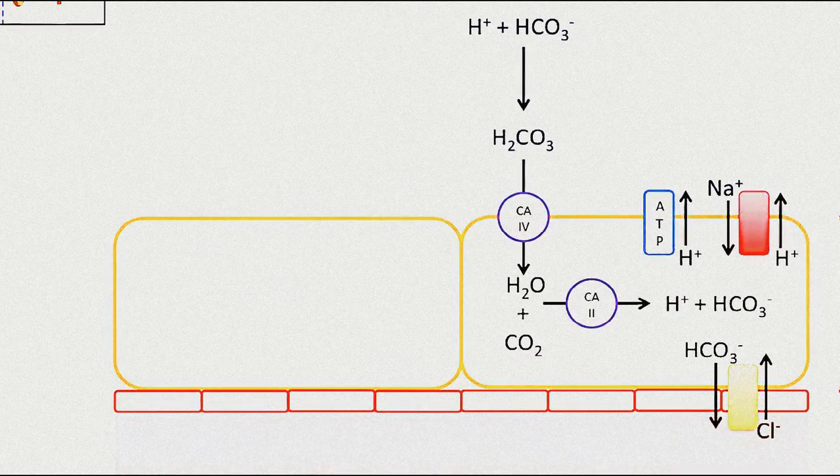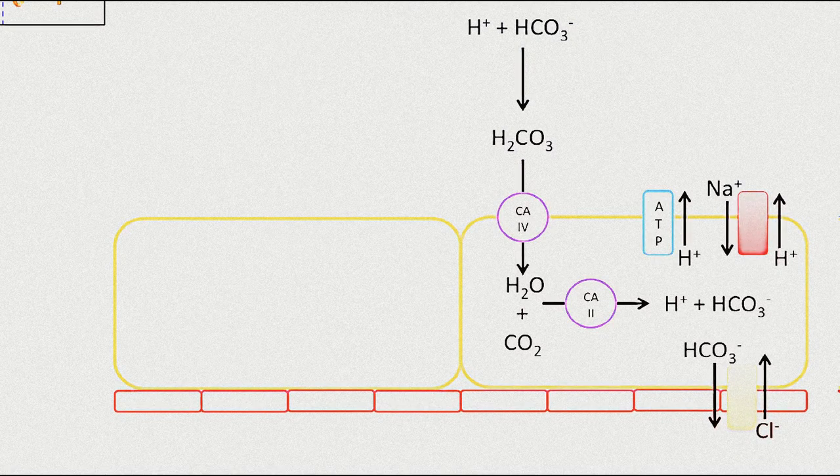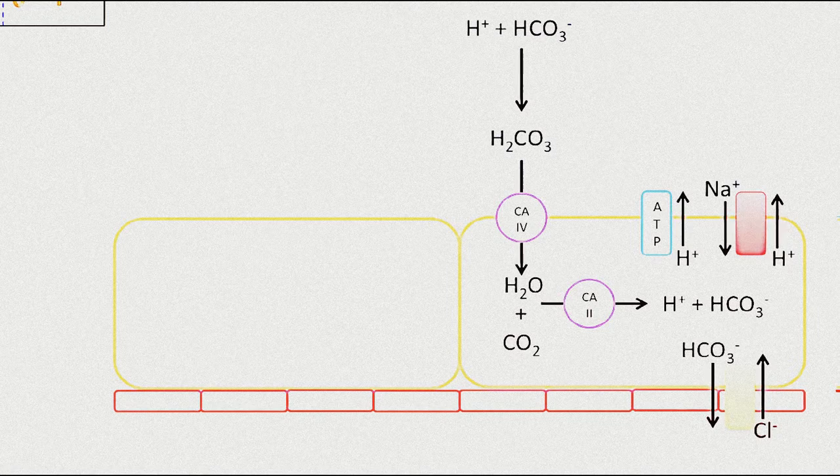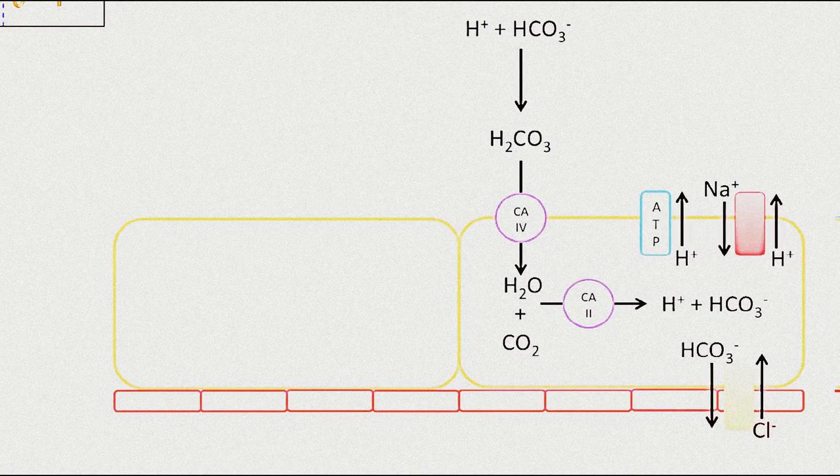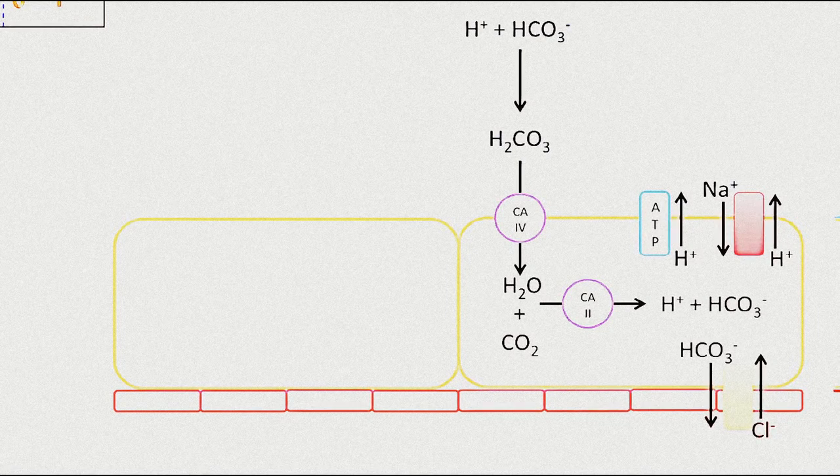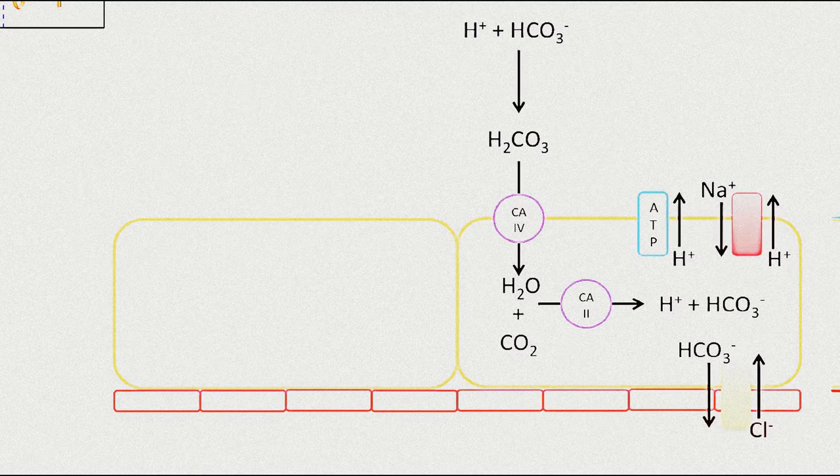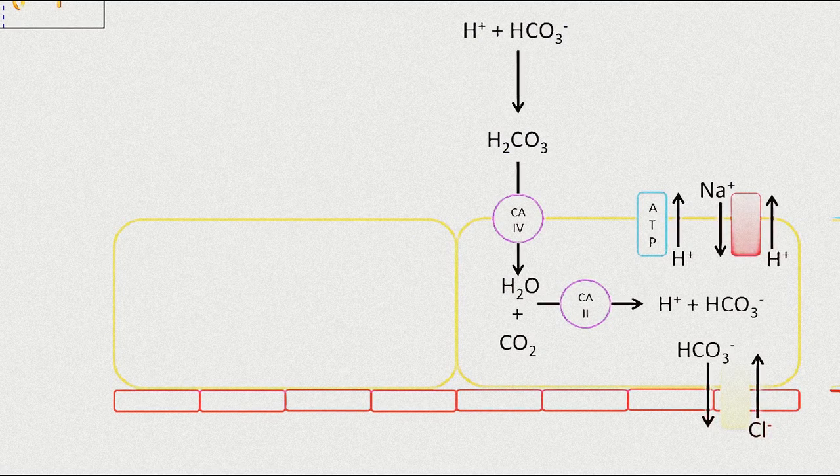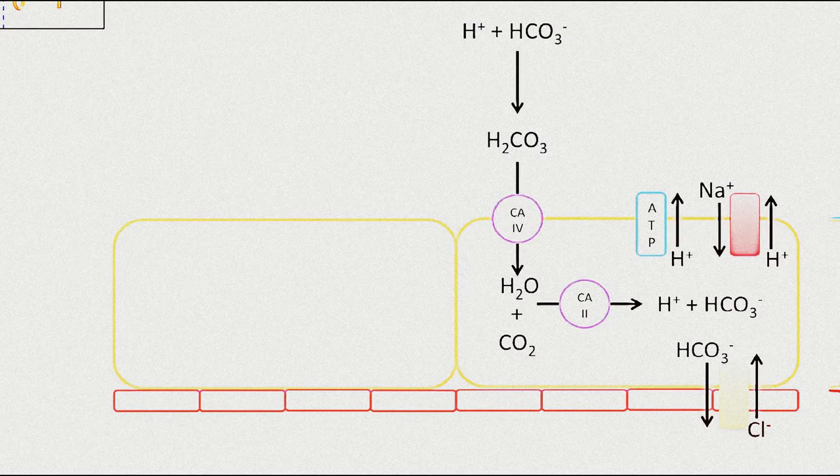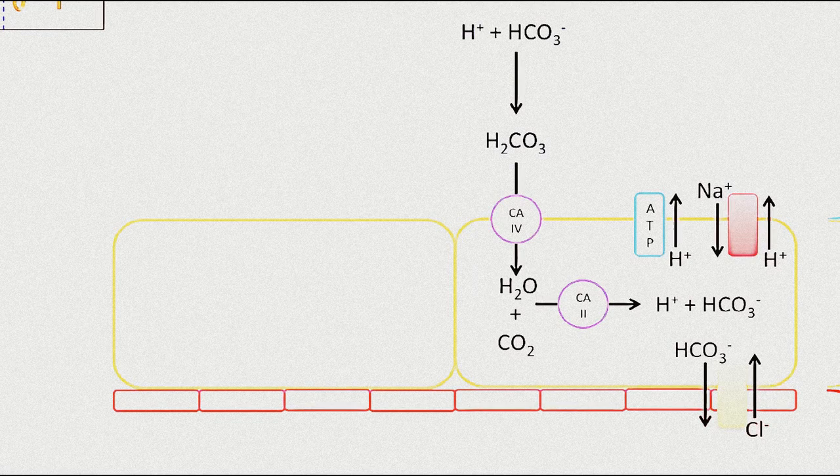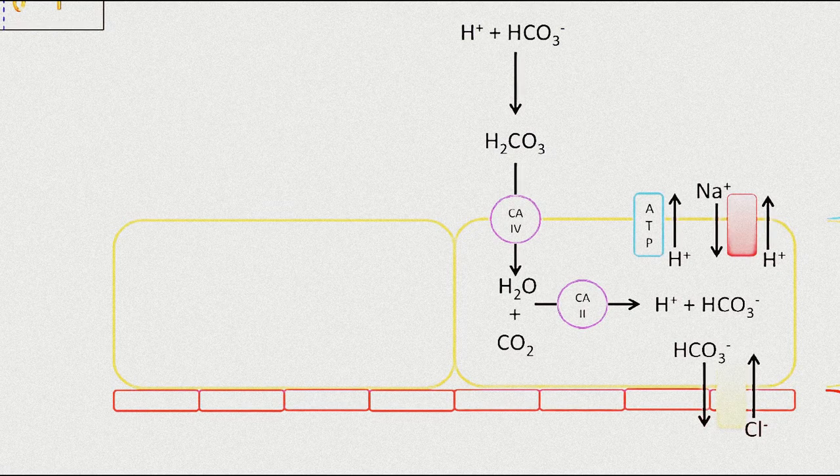We'll recap that again. The filtered proton and bicarbonate joins up to form carbonic acid that then joins up with luminal carbonic anhydrase 4 to form water and carbon dioxide, which is then taken at carbonic anhydrase 2 and converted into protons and bicarbonate.